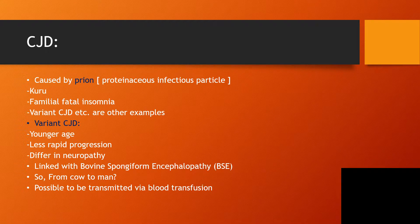Creutzfeldt-Jakob disease is caused by a prion. A prion is a proteinaceous infectious particle, and it is responsible for the formation of other diseases like kuru, fatal familial insomnia, variant CJD, and other examples.